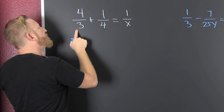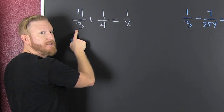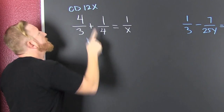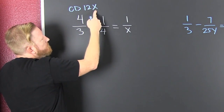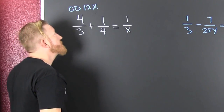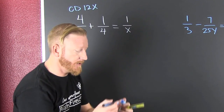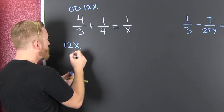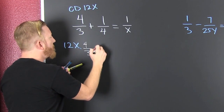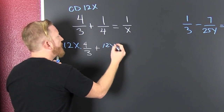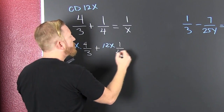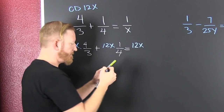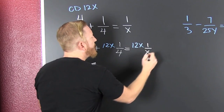What's the common denominator between 4 and 3? 12! So our common denominator is 12 and x, because that's the first product that all three of these will divide. So we're going to multiply everything by that common denominator — 12x times 4/3, plus 12x times 1/4, equals 12x times 1/x.